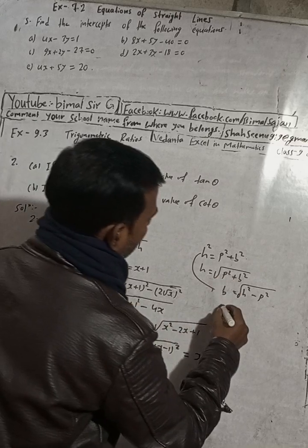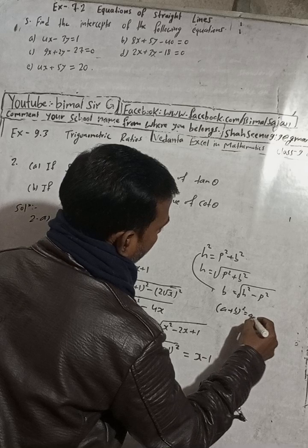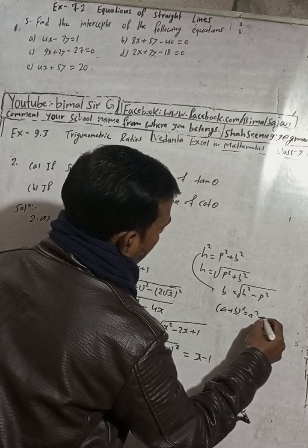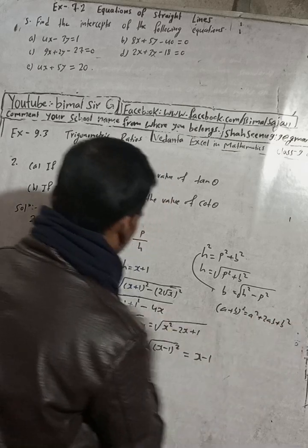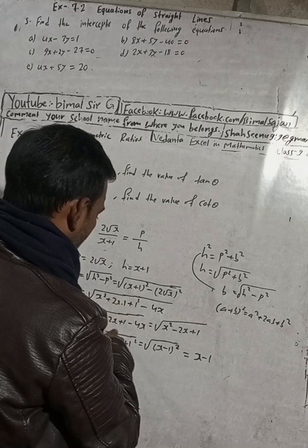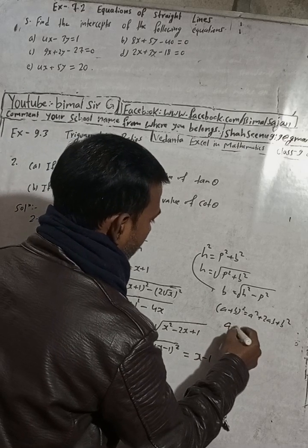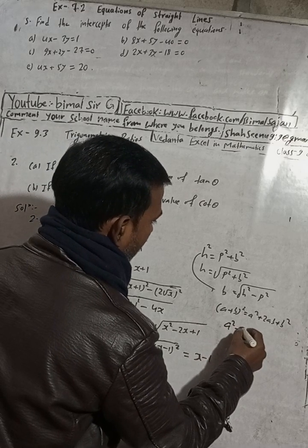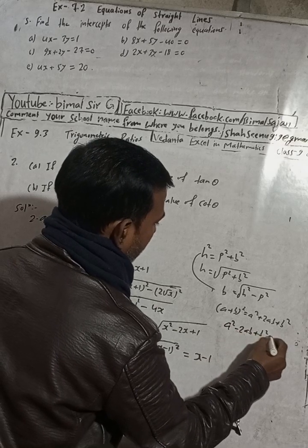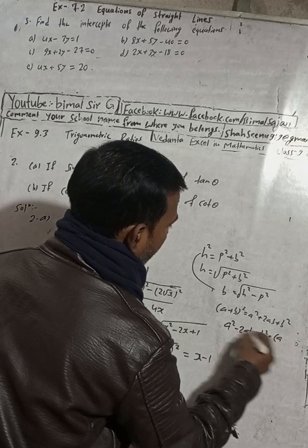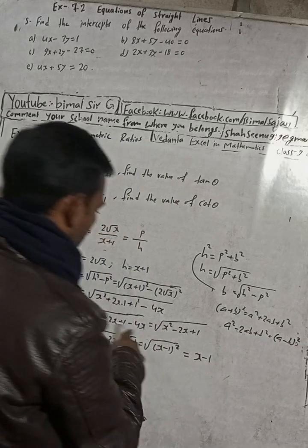The formula is: a plus b whole square equals a squared plus 2ab plus b squared. And a minus b whole square equals a squared minus 2ab plus b squared.